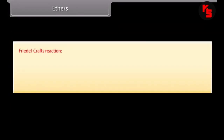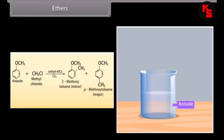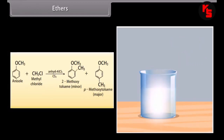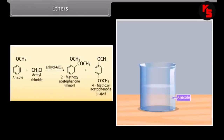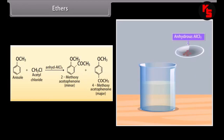Friedel-Crafts reaction: in the presence of a Lewis acid catalyst like anhydrous aluminium chloride, methyl chloride reacts with anisole in carbon disulfide to form 2-methoxytoluene and 4-methoxytoluene. Acetyl chloride reacts with anisole in the presence of anhydrous aluminium chloride to form 2-methoxyacetophenone and 4-methoxyacetophenone.